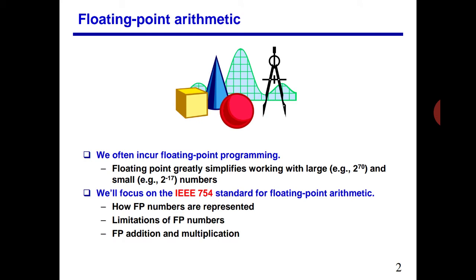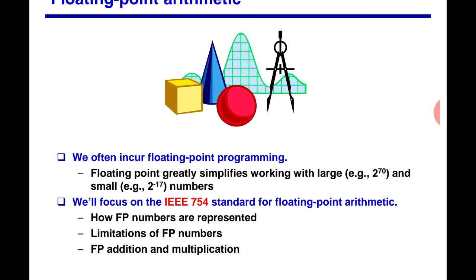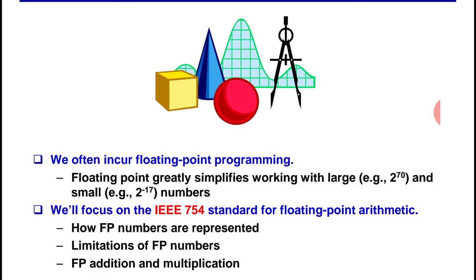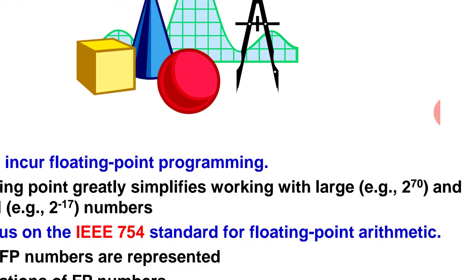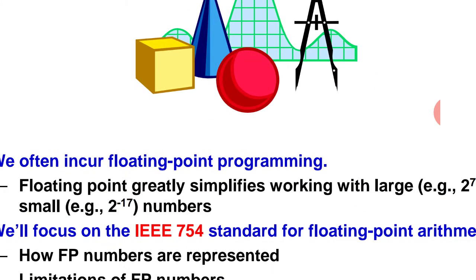We often face floating point programming. Floating point greatly simplifies working with large numbers, like 2 to power 70 and small like 2 to the power minus 17. Whenever we write some program, the teacher advises you to use float variables so that whenever we encounter any floating point variable, the program can be executed easily.